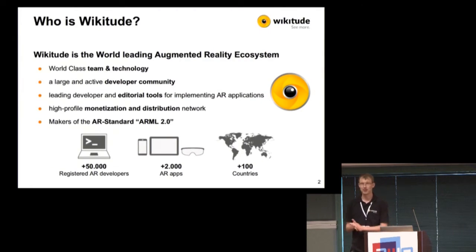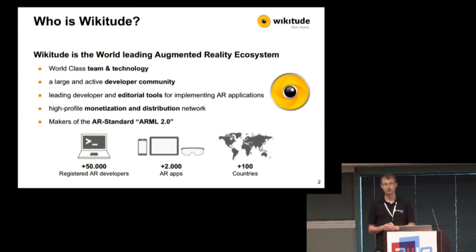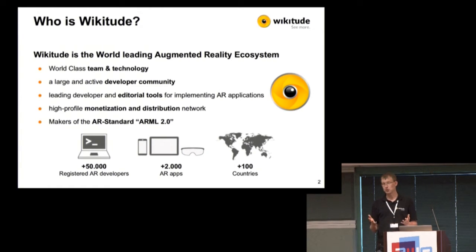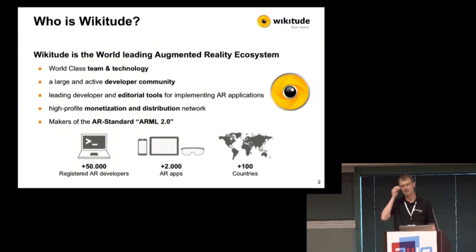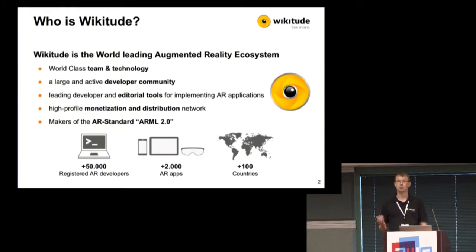Let's jump in — who is Wikitude? We are an augmented reality software technology provider based in Salzburg, Austria. We have software tools for developers to create their own AR experiences. We've been around for six years, have more than 50,000 registered developers, over 2,000 AR applications published in stores, and coverage in more than 100 countries.